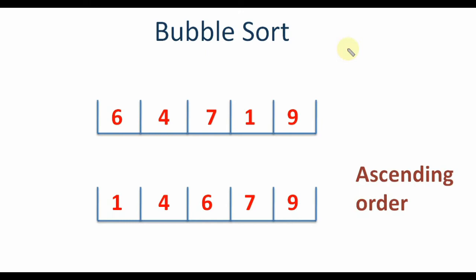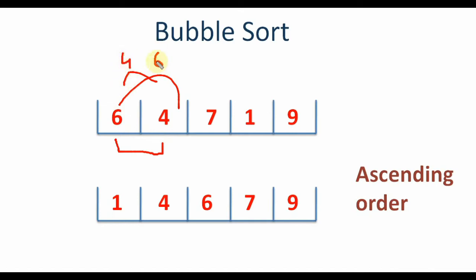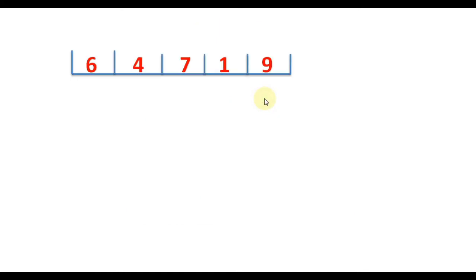Now let's see how bubble sort works. In bubble sort we compare each element with the adjacent element, and if the first element is greater than the next element we'll swap it, if we want the output in ascending order. Let's understand this clearly with an example. Our array is 6, 4, 7, 1, 9.